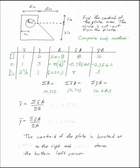So if you find x-bar is 15.215 over 10.215, gives you 1.4895. And y-bar will be 16.643 divided by 10.215 is 1.6294.